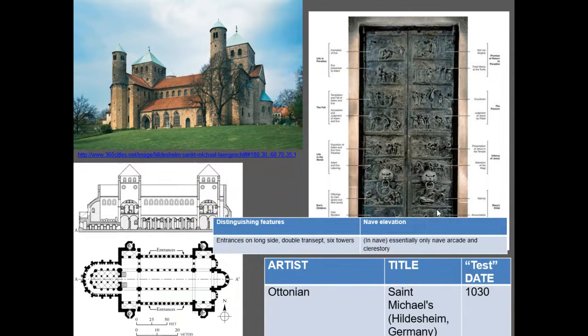Speaking of the Ottonians: after about the year 880, the power of Charlemagne's line began to dissipate. Around 920, the first of the emperors named Otto came to power — Otto the First — for whom we named the Ottonian era. The Ottonian era lasts until about 1020, roughly another hundred years of ruling the Holy Roman Empire. Both the Carolingian and Ottonian eras are technically part of the Holy Roman Empire, but we separate them out — the Carolingian first under Charlemagne, the Ottonian beginning with the reign of Otto the First.